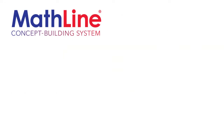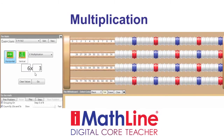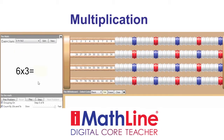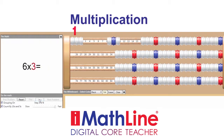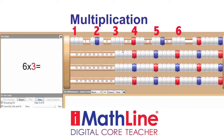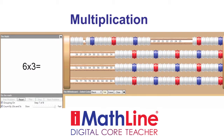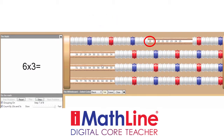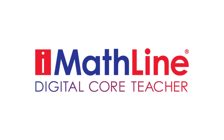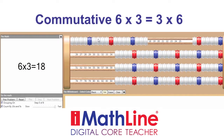Now let's do a multiplication problem. We set up the problem six times three and step through it by building six groups of three: one group, two groups, three groups, four groups, five groups, and six groups of three. We get our product eighteen and write it down. MathLine can be used to teach the commutative property — six times three, or six groups of three, is equal to three times six, or three groups of six.